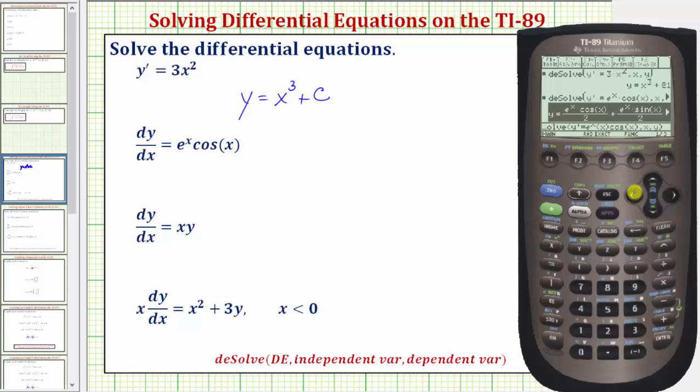So we can write the general solution in various forms. Let's write this as y equals one half e to the x cosine x, plus one half e to the x sine x, and then of course plus c.